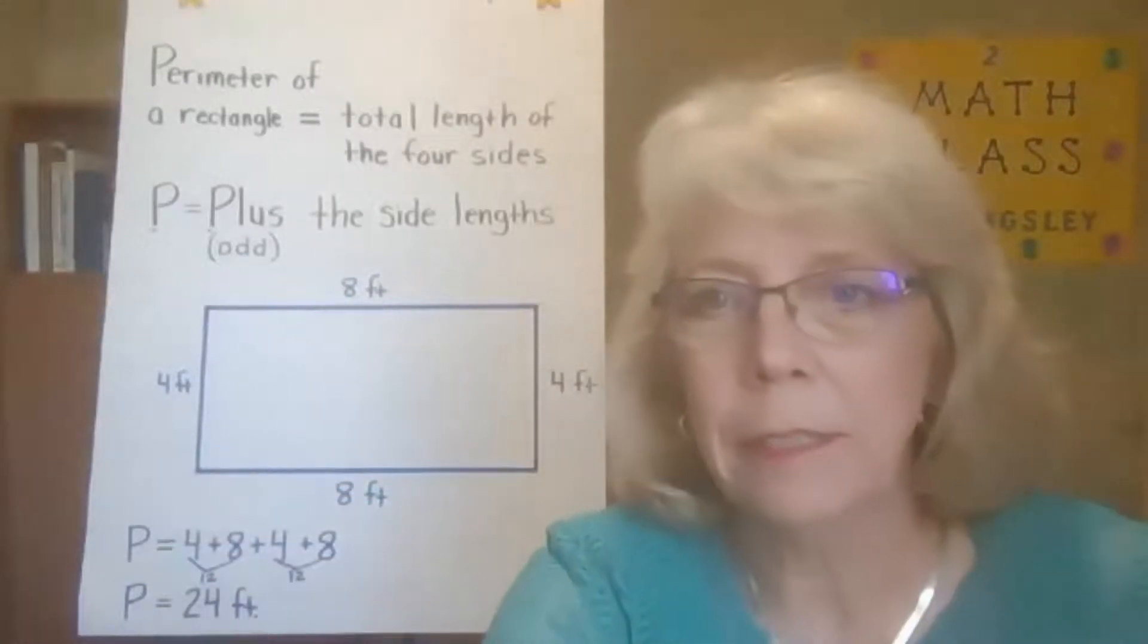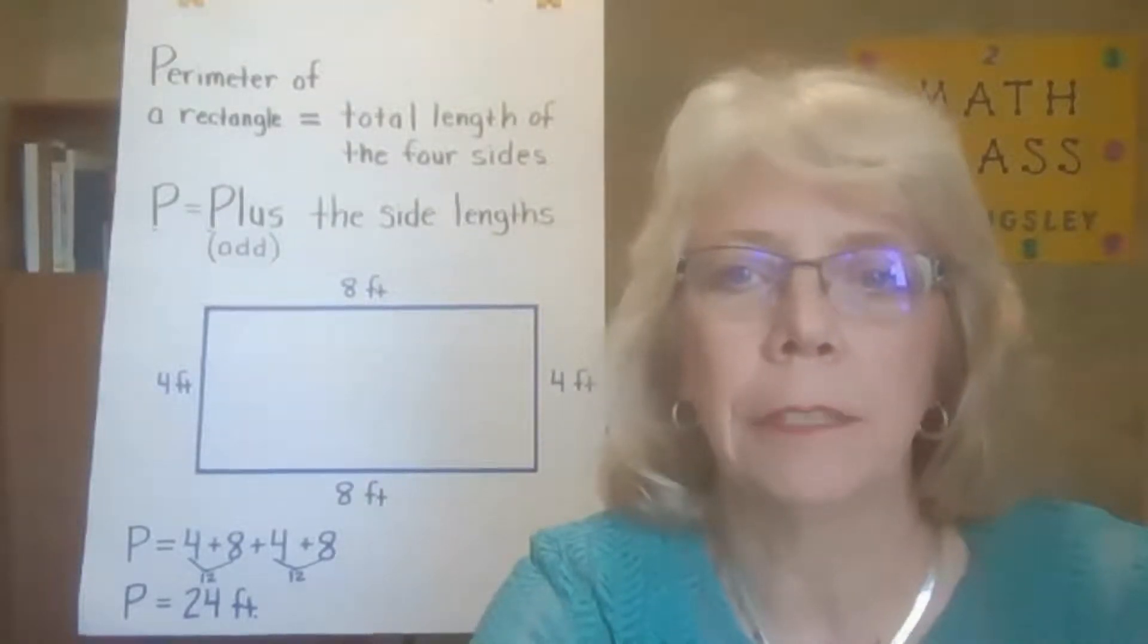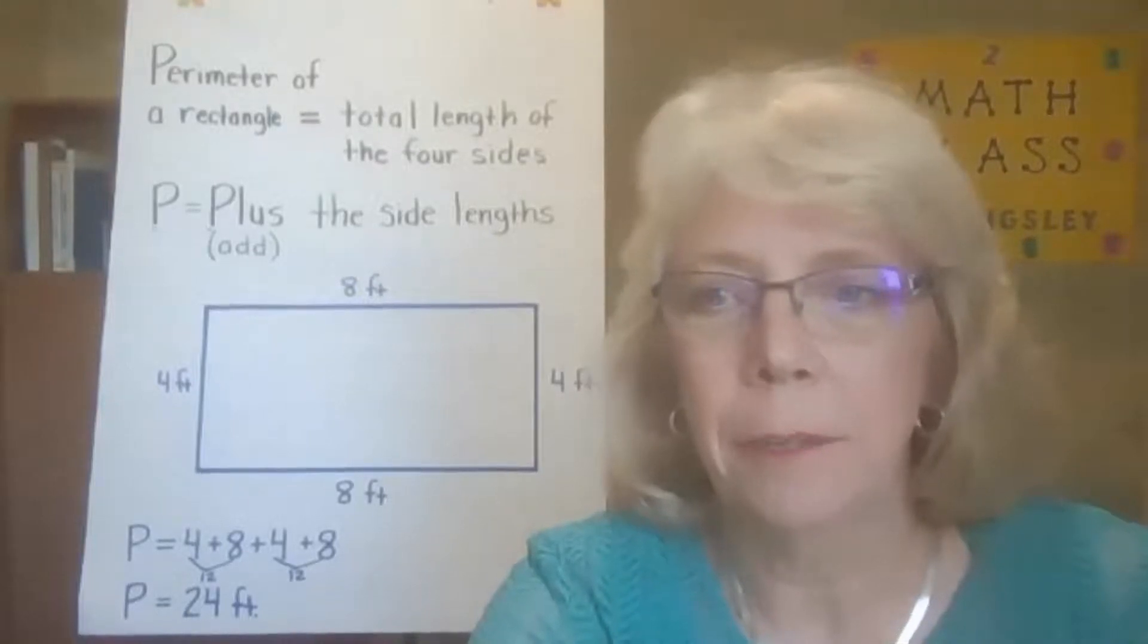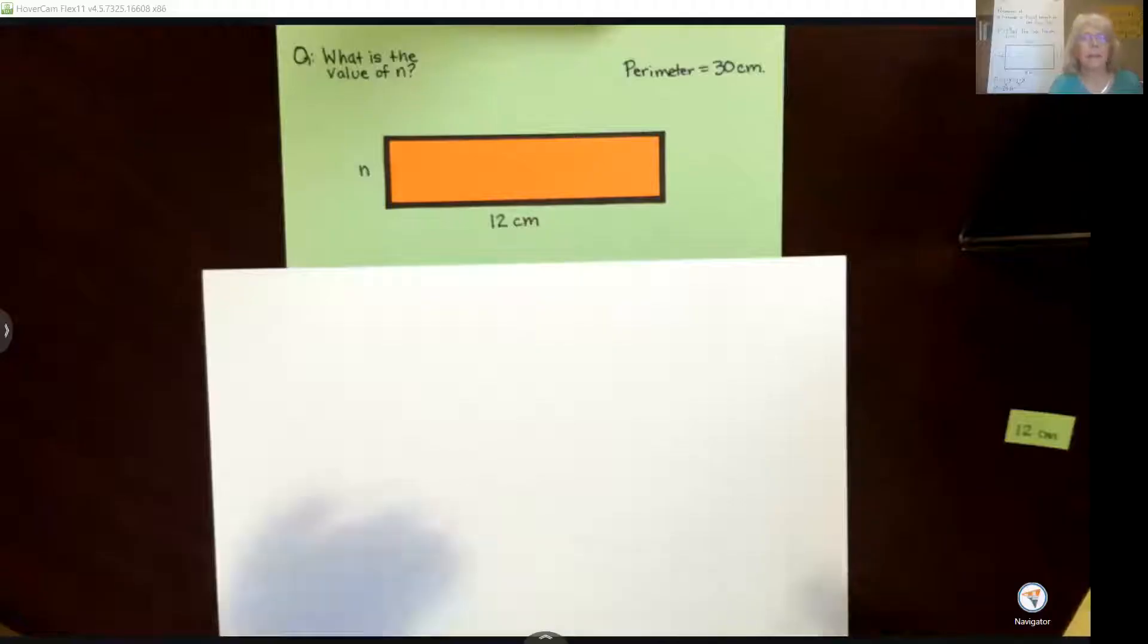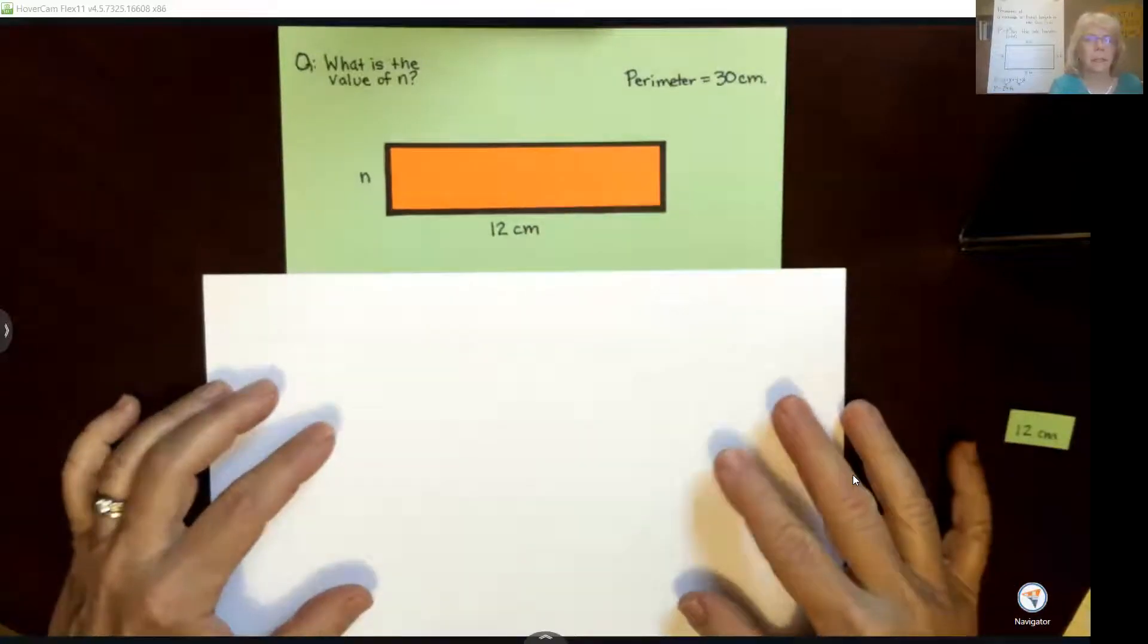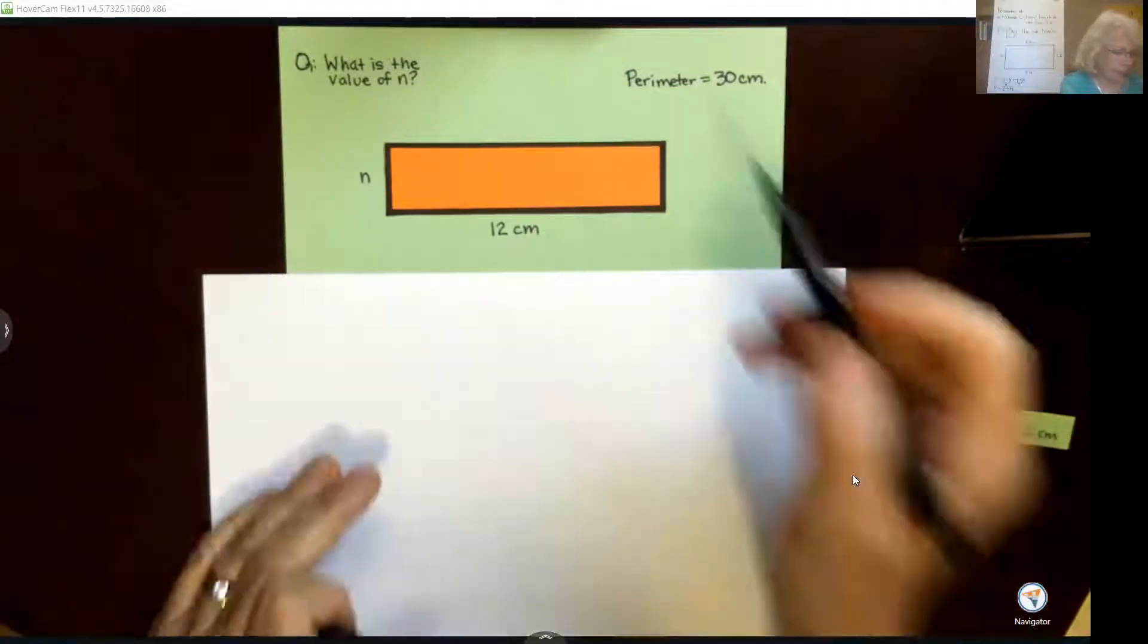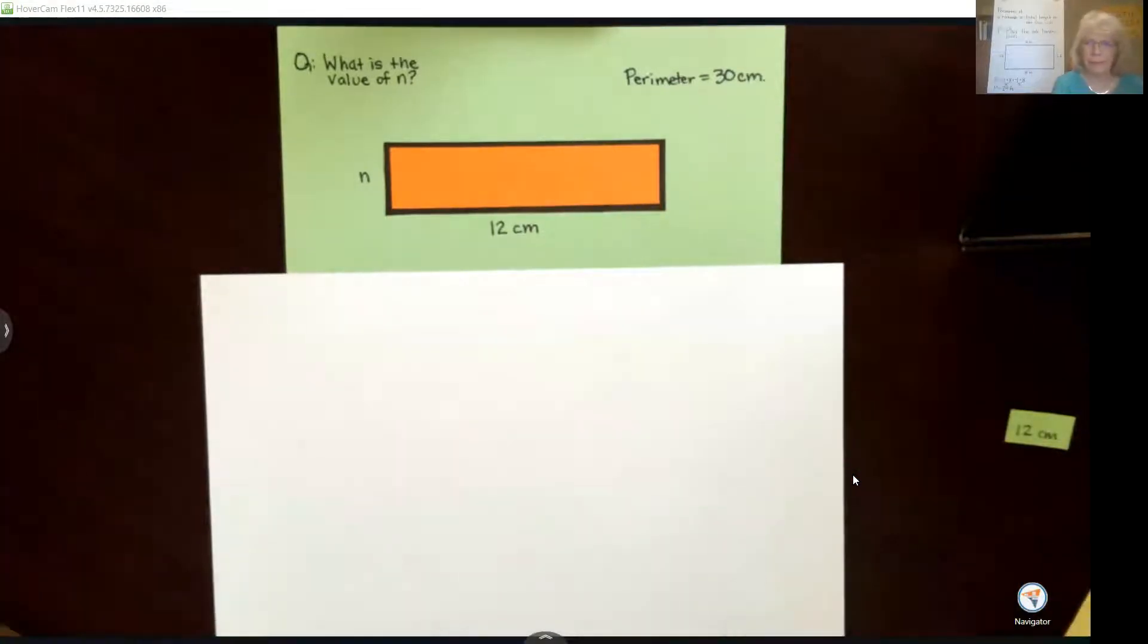Okay, now we're going to look at what happens when we go to a rectangle where we don't have that much information. Here we go. Okay, so here we have a rectangle where we are given one side and then we are given the perimeter. So what do we do with this?